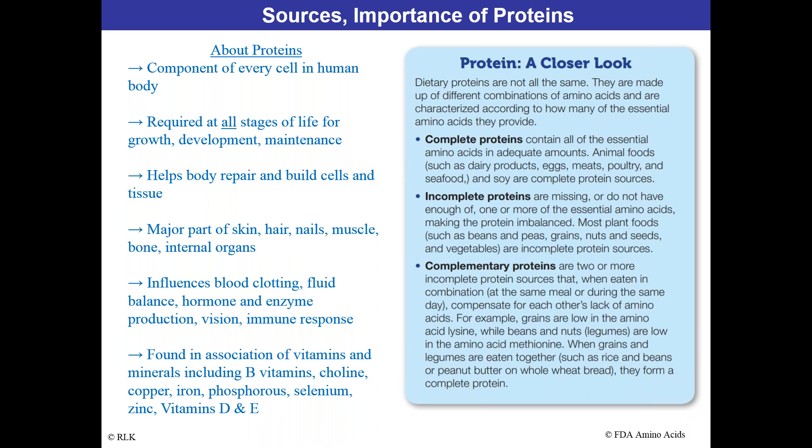For instance, grains are low in lysine, while beans and nuts — legumes — are low in the amino acid methionine. So when grains and legumes are eaten together, such as rice and beans or peanut butter on whole wheat bread, they form a complete protein. This gives rise to different food combinations. We think about foods we eat and try to get things we like — taste profile, texture profile — but there's also a whole other reason: getting the right balance of nutrients.